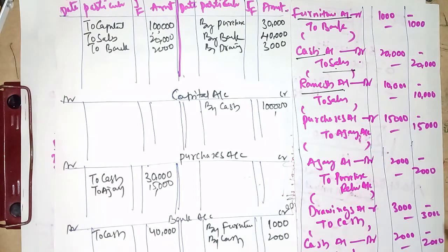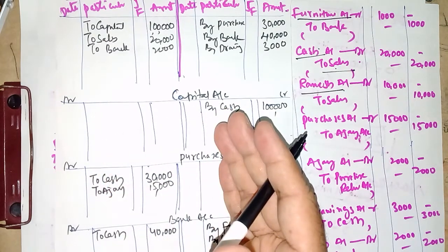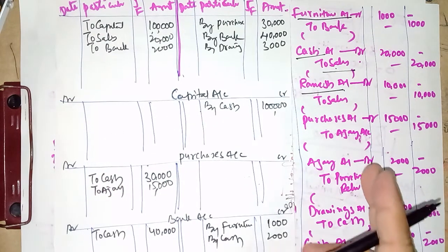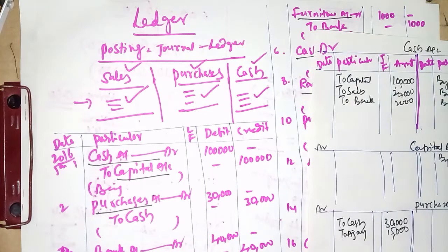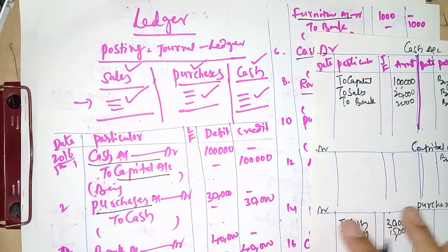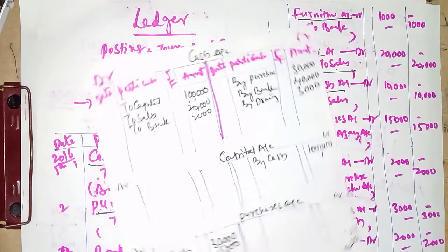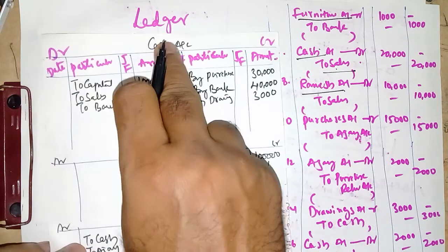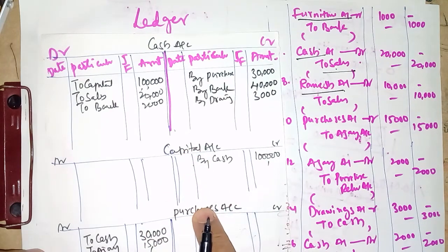We have now posted all entries into the ledger — this process is called posting into the ledger. Once done, at the end of the month or year we close the ledger and ascertain the balance. The key difference is: in journal, all transactions are recorded without any division in chronological order; in the ledger, transactions are divided — all cash transactions in Cash Account, capital in Capital Account, purchases in Purchase Account — this is the differentiation.